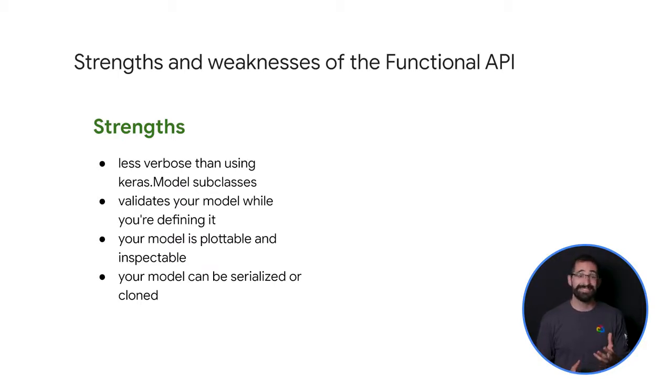Your functional model can be serialized or cloned. Because a functional model is a data structure rather than a piece of code, it's safe to serialize and can be saved as a single file that allows you to recreate the exact same model without having access to any of the original code. See our saving serialization guide for more details.